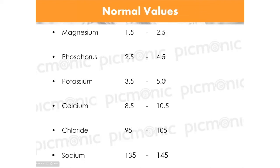An important thing to understand: if a normal range is 1.5 to 2.5, that's a very small amount in the serum — in the extracellular space. We cannot measure intracellular lab values directly; we measure the extracellular volume because it tells us what those levels will do to intracellular levels, and then we know what signs and symptoms to expect.